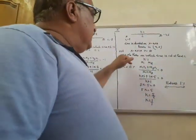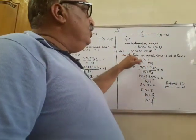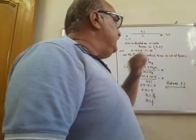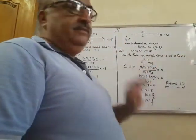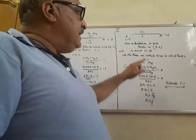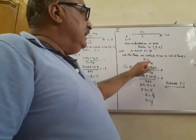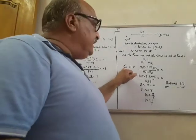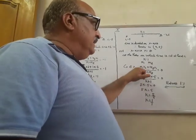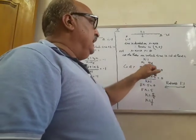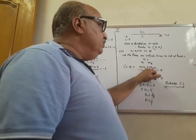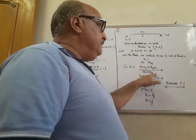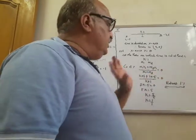उसी तरह से, let the ratio on which the line is cut at point C be K ratio 1. यह काम करेगा M1, M2 का. Now find out the y-coordinate: M1 into Y2 plus M2 into Y1, upon M1 plus M2, equal to 0.